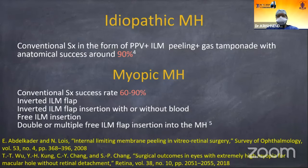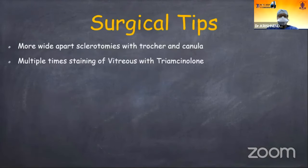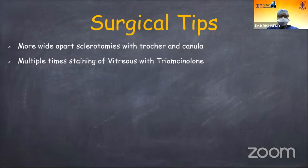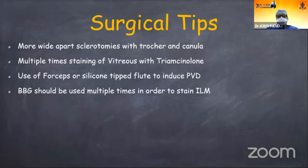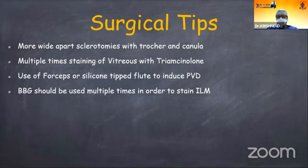The outcome of idiopathic macular hole surgery is more successful at around 90%, but in myopic macular hole the success rate comes down to 60–90%, varying from person to person. Surgical tips include: making sclerotomies wide apart to easily reach the posterior pole, staining the vitreous with triamcinolone acetonide multiple times, and using forceps or a silicone-tipped fluid cannula to induce posterior vitreous detachment. Brilliant blue-green dye should be used multiple times to visualize the ILM, as it is not visible well with a single staining technique.